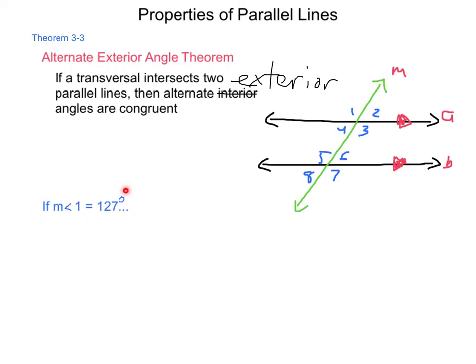If we know that the measure of angle 1 is 127 degrees, what can we conclude? Placing 127 degrees on angle 1: angles 1 and 2 form a linear pair and are supplementary, so angle 2 is 53 degrees. By the same reasoning, angle 4 is 53 degrees, and by linear pair, angle 3 is 127 degrees. So that first quartet of angles is found simply from the value of angle 1.